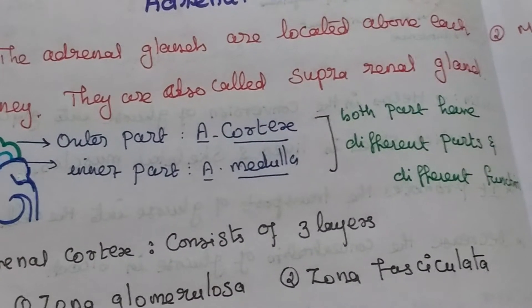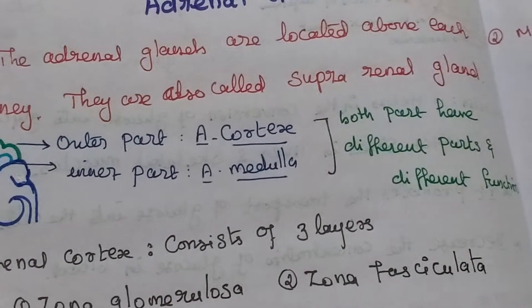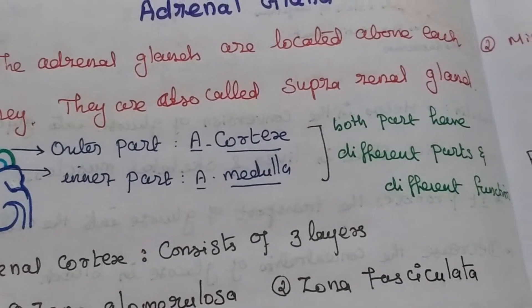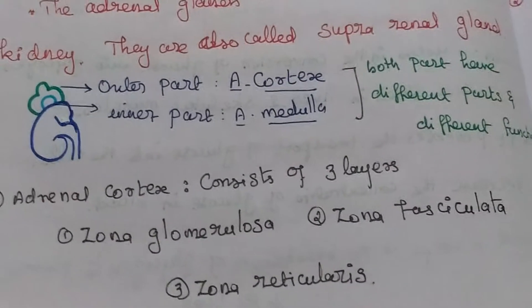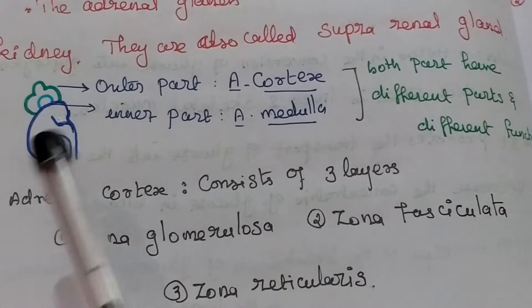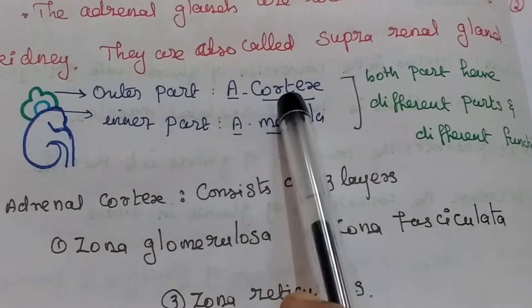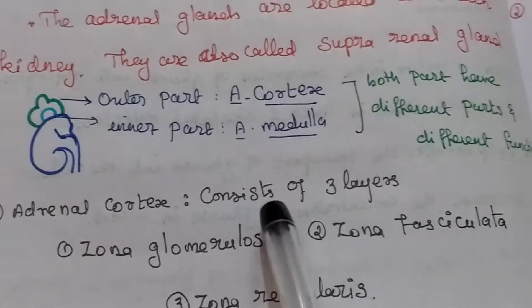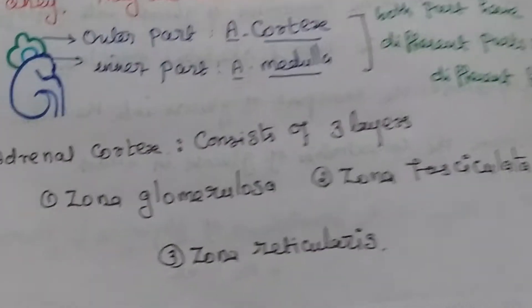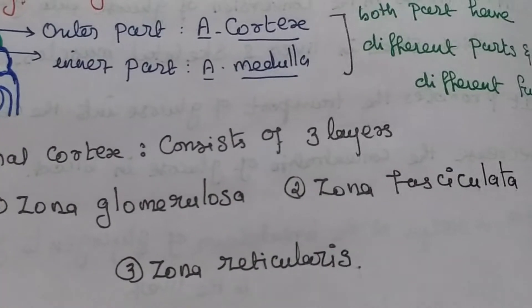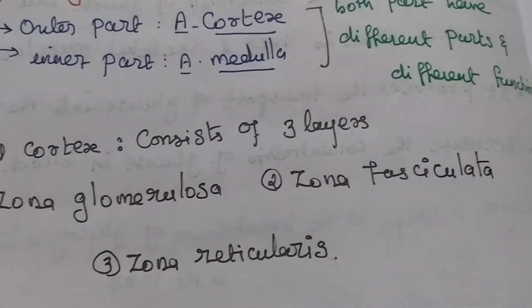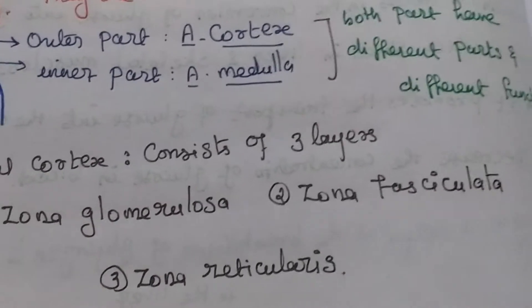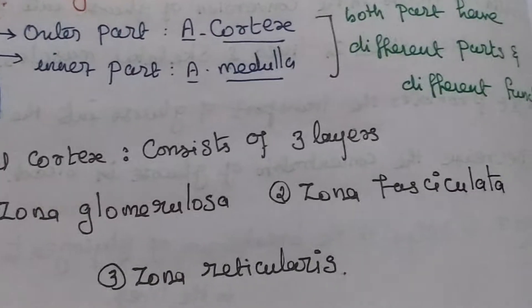Both parts have different structures and different functions. The adrenal cortex consists of three layers: zona glomerulosa, zona fasciculata, and zona reticularis.